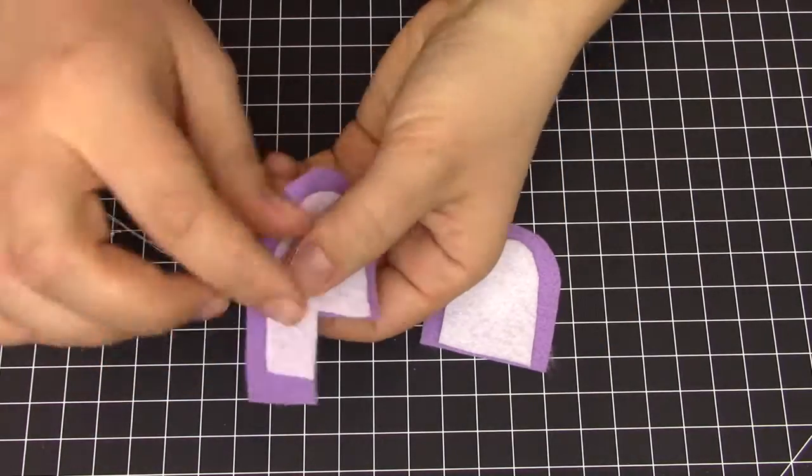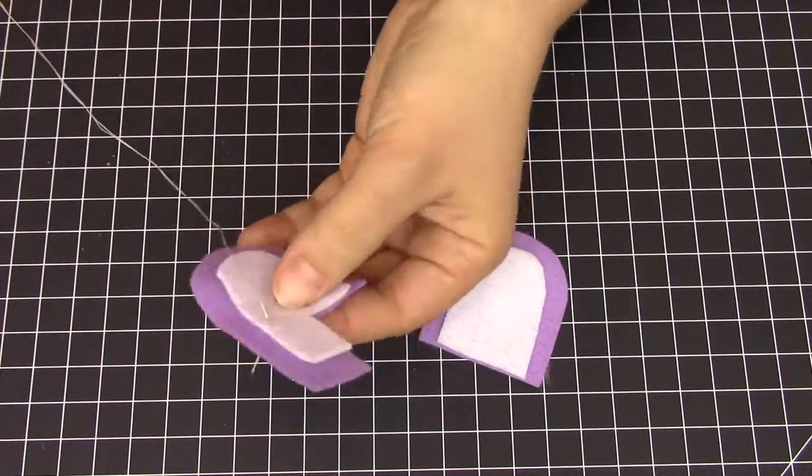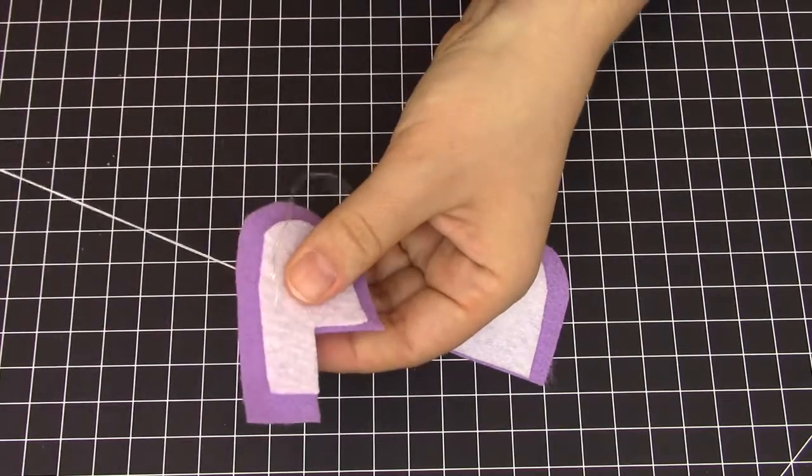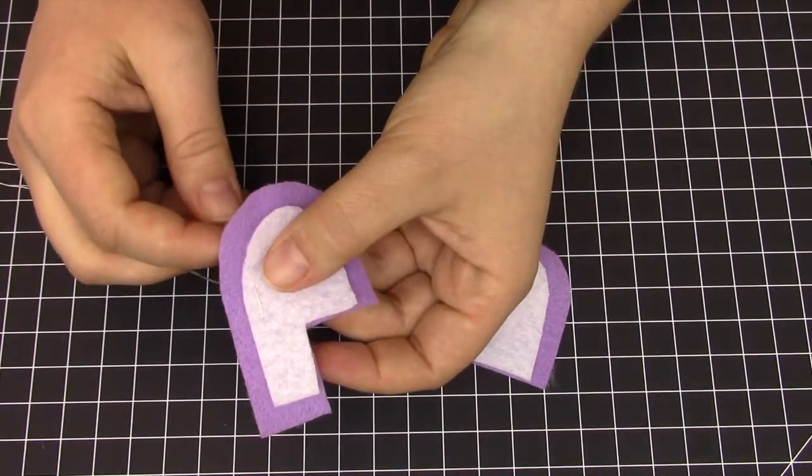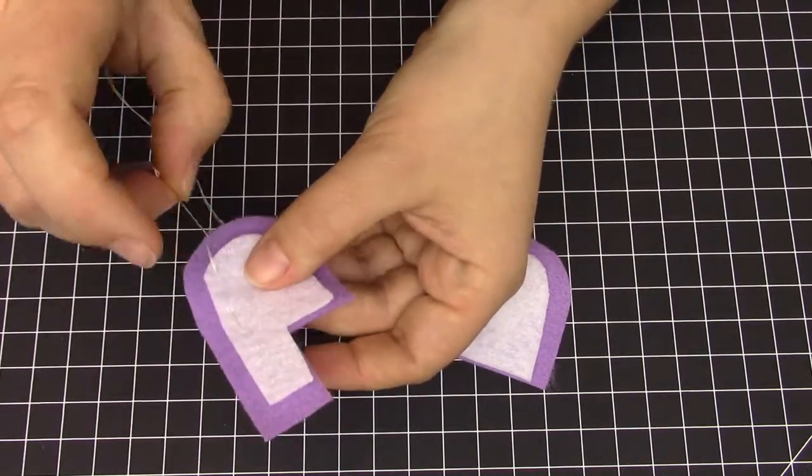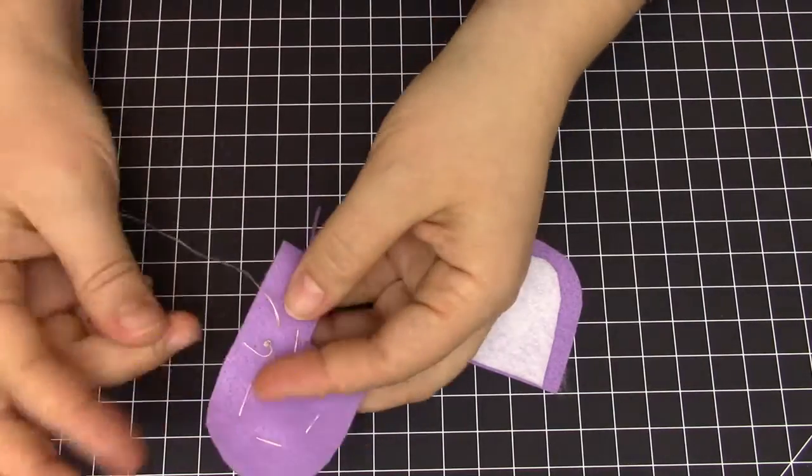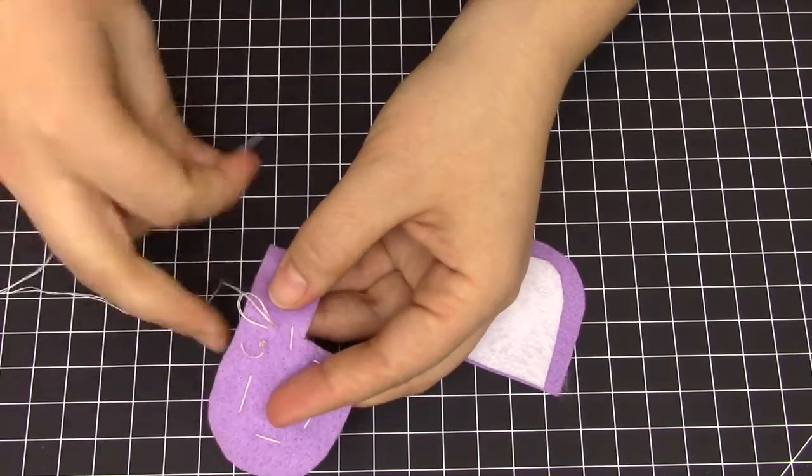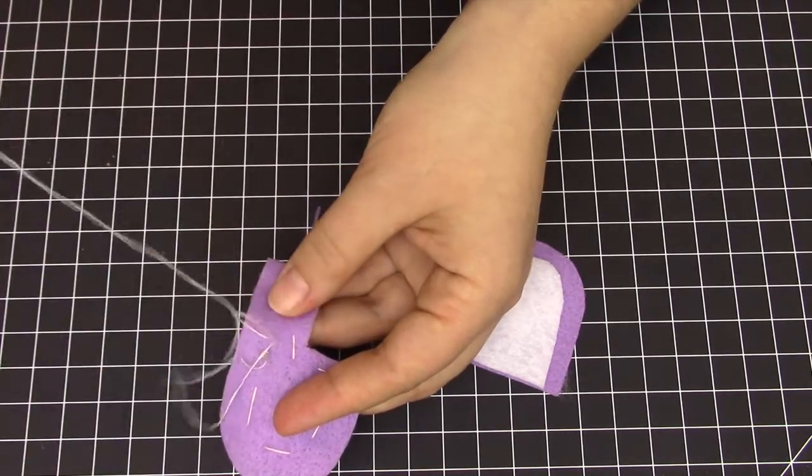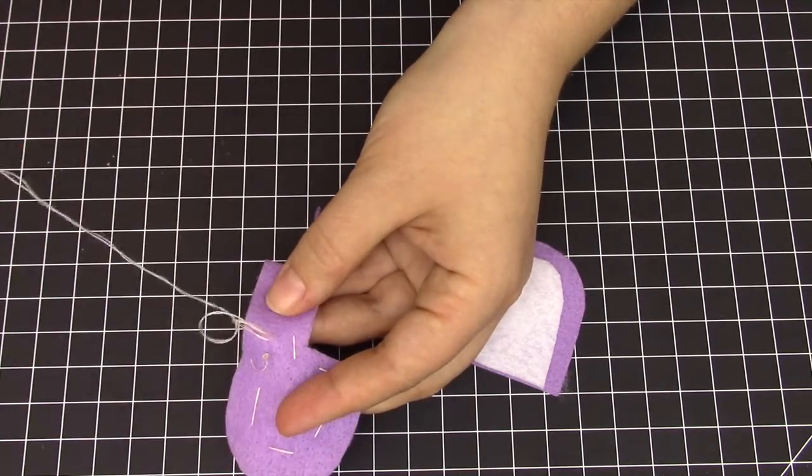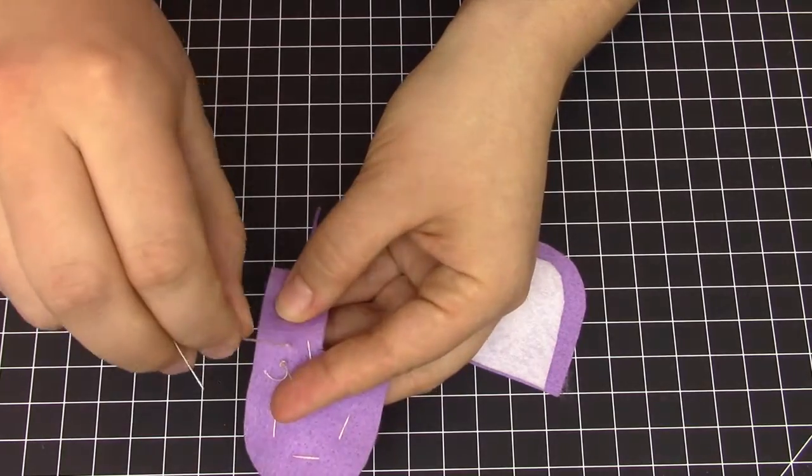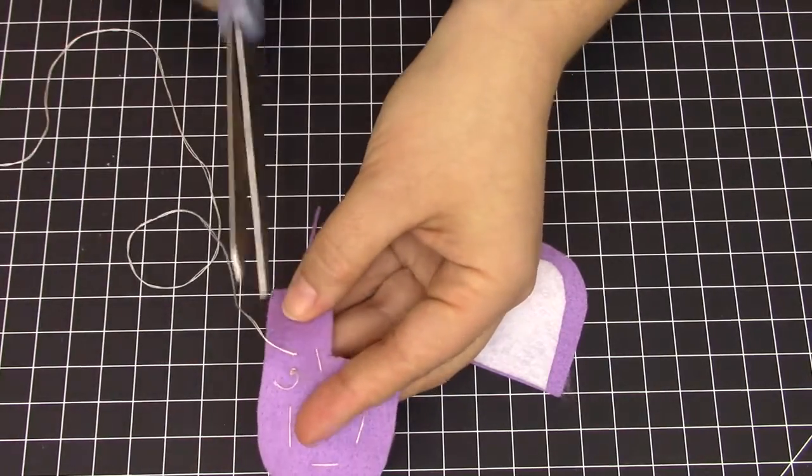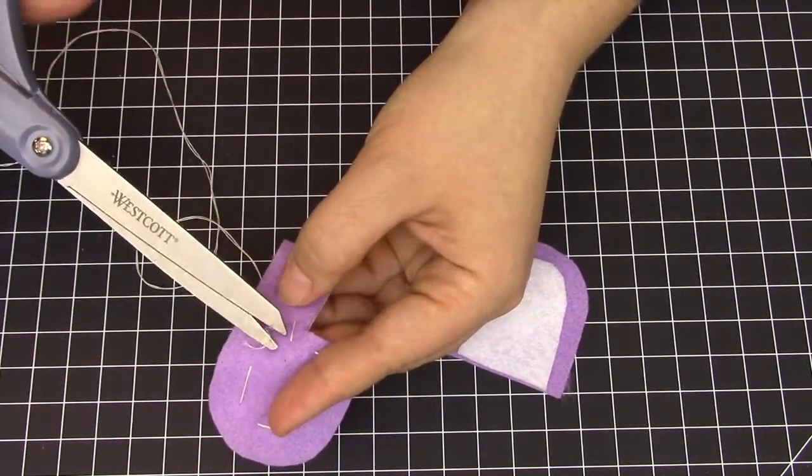Next, take half of your heart and starting from the back, make large stitches up and down to connect the white to the purple piece. To tie a knot, go through only the purple layer and leave a loop. Then thread the needle through two or three times from the same direction, and pull this tight. This will create a knot. Trim the thread. Repeat this for the other half.